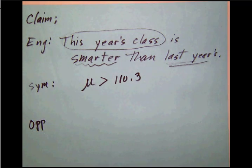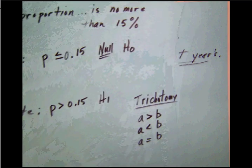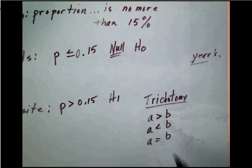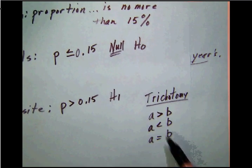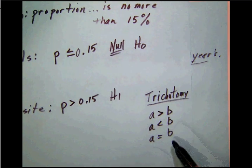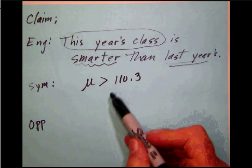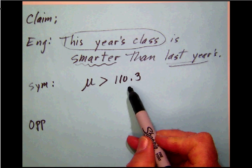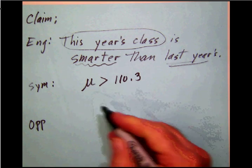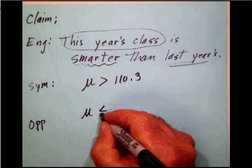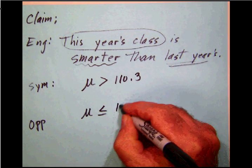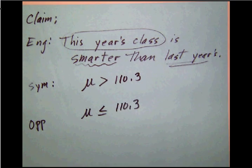And remember the mathematical trichotomy that we talked about earlier here, that there are three ways that numbers relate to each other. A greater than b, less than b, or equal to b. Well, in this case here, notice that the μ is greater than 110.3. So the opposite of that must be that μ is less than or equal to 110.3.